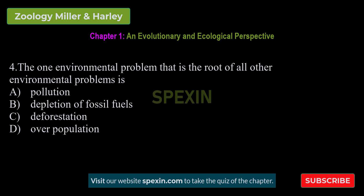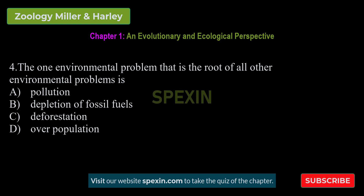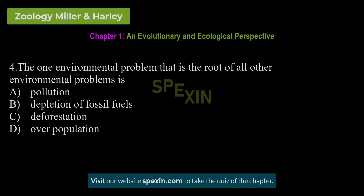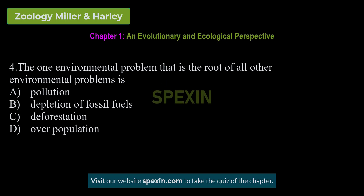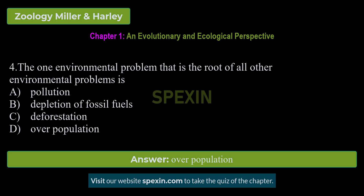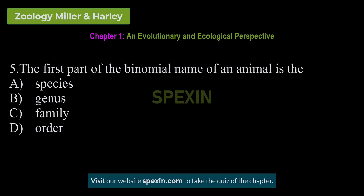The one environmental problem that is the root of all other environmental problems is: Pollution — Depletion of fossil fuels — Deforestation — Overpopulation. Correct answer: Overpopulation.